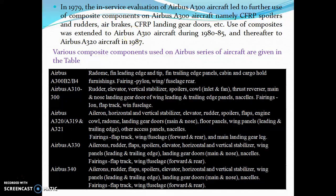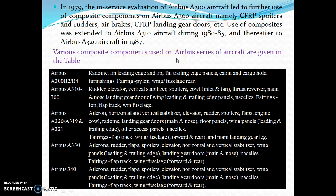Later on, in 1979, the service evaluation of the A300 aircraft led to further use of composite components on aircraft, mainly as CFRP — carbon fiber reinforced polymers. And later, from 1980 to 1987, various composite components were used on the Airbus series of aircraft.